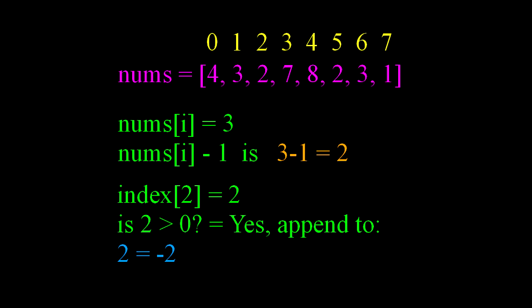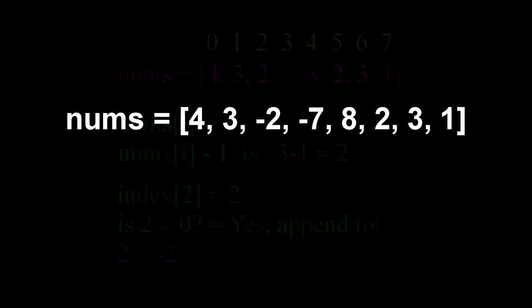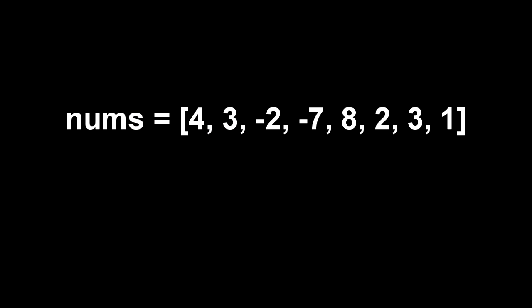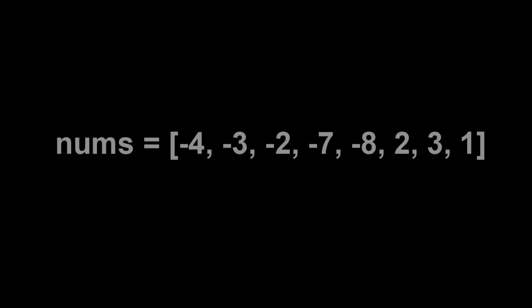And then we move to the next element, which is 3, subtract 1, we get 2, index position is 2, which actually happens to be 2. It's greater than 0, so we reassign it to negative 2. Our array is looking like this, and so on and so forth. Eventually, we're going to get an array that gets all the way to this.